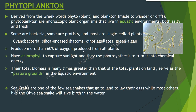Phytoplankton produce more than 60 percent of oxygen produced from all plants. Like any other plants, they have chlorophyll to capture sunlight and use photosynthesis to turn it into chemical energy. They take carbon dioxide and release oxygen, and also consume other organisms. These microalgae are present throughout the lighted regions of all water bodies including seas and oceans including the polar regions. Their total biomass is many times greater than that of all plants on land. They serve as the pasture grounds in the aquatic environment.